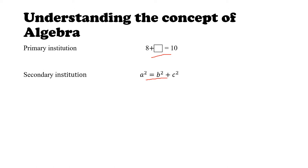And then when we reach tertiary institution or a higher level, things might get a little more intricate. When we're doing limits, we have a sign we might never have seen before. Then we have an N — N here, N there. But again, these three things — primary, secondary, and tertiary — have something in common: they all have unknowns. Yes, and we cannot deny that.